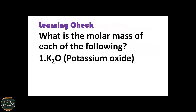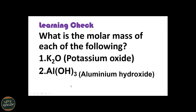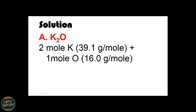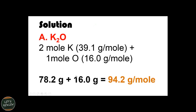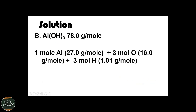Let's solve two more examples: potassium oxide (K₂O) and aluminum hydroxide (Al(OH)₃). For potassium oxide, we have two atoms of potassium at 39.1 g/mol each, so 39.1 times 2 equals 78.2 grams, plus one atom of oxygen at 16.0 grams. The total molar mass of potassium oxide is 94.2 grams per mole. For aluminum hydroxide, we have one mole of aluminum at 27.0 g/mol.